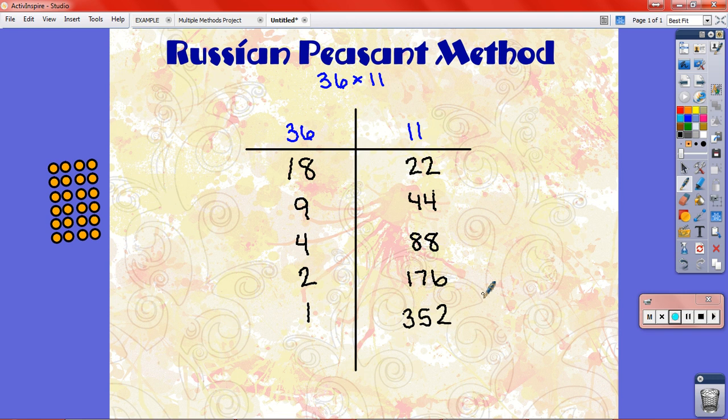Okay. This is where the method starts to get really weird. We're going to be crossing out all of the pairs where the number that we cut in half was even. So 36 we cut in half, that was even. 18 is even, so we cross that out. 9 is odd, we're going to leave that. 4 is even, cross that out.